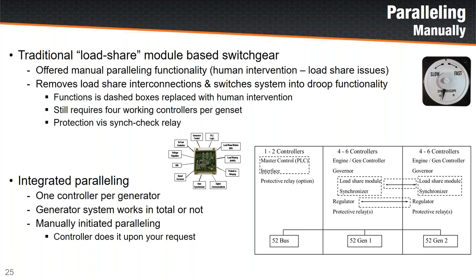Traditional switchgear had a method for manual paralleling, but even in manual mode, each generator required four functioning microcontrollers to be working for the generators to parallel. As manufacturers have integrated systems, manual paralleling now means telling a single controller on the generator to parallel. When you only have one controller, it either works or it doesn't — instead of needing four controllers working, you only need one.